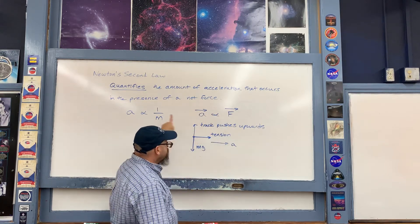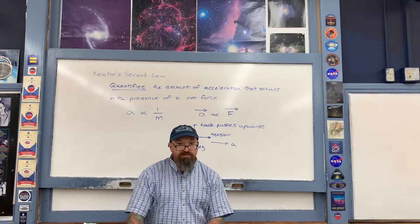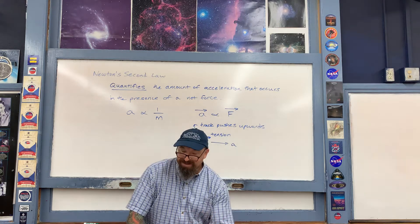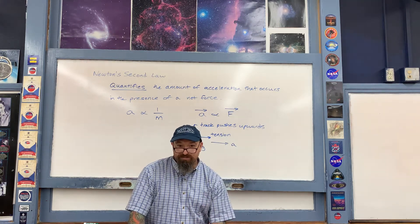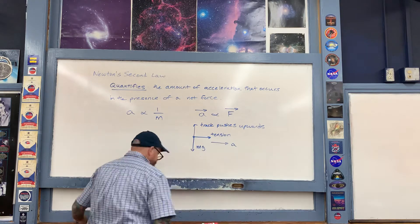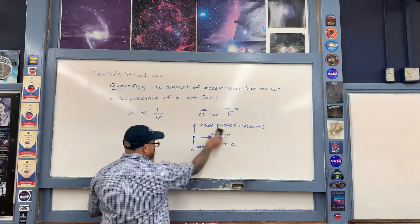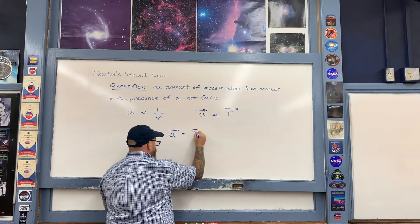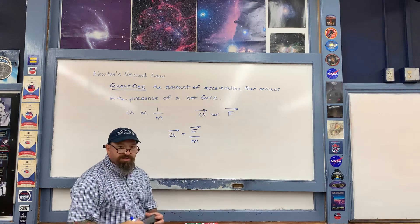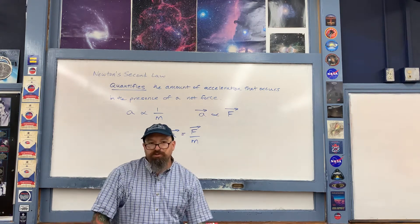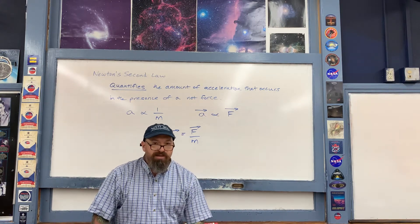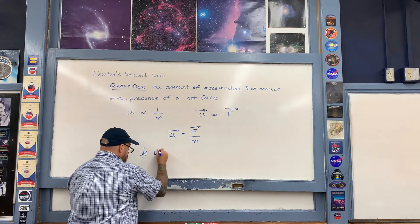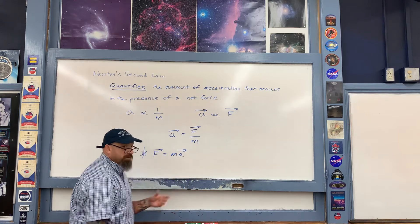We combine these two proportionalities into a seemingly very simple equation. We combine them by writing the expression with an equal sign, and usually the mass is moved up to the numerator on the other side of the expression. We therefore write Newton's second law as: F equals ma.